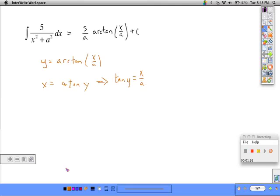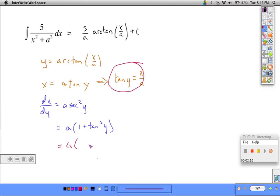If we take the derivative here of x with respect to y, what we get is a secant squared y. Substituting a Pythagorean identity, and then taking our idea from right here, we can substitute that a times 1 plus x squared over a squared is equivalent to that. 1 is the same thing as a squared over a squared.